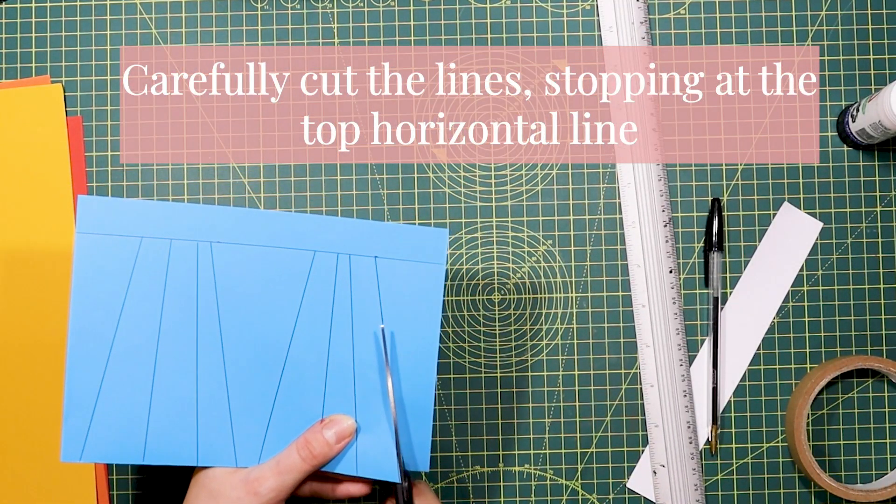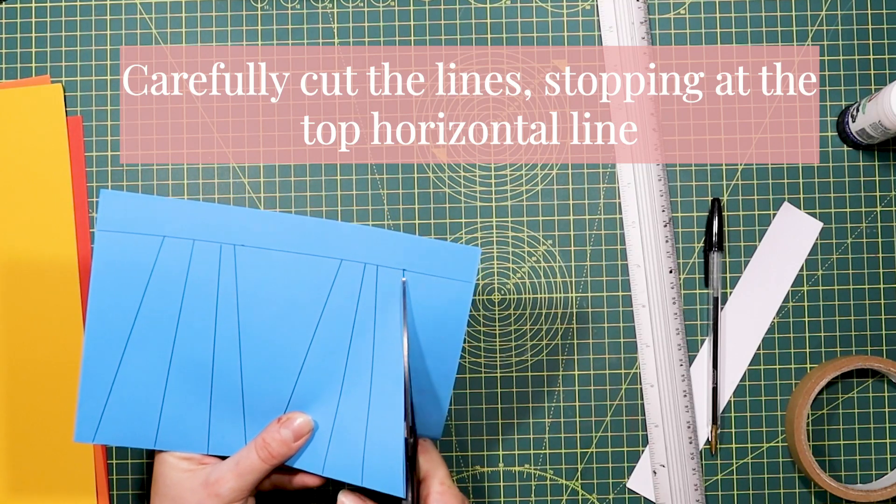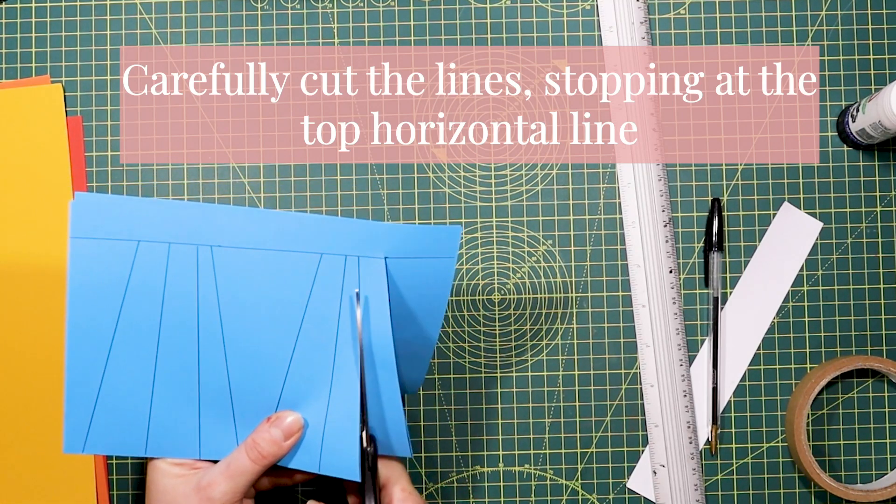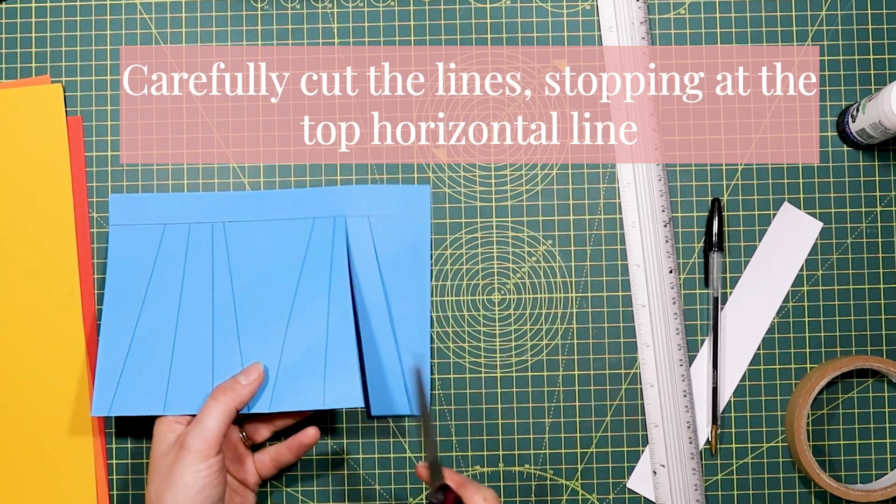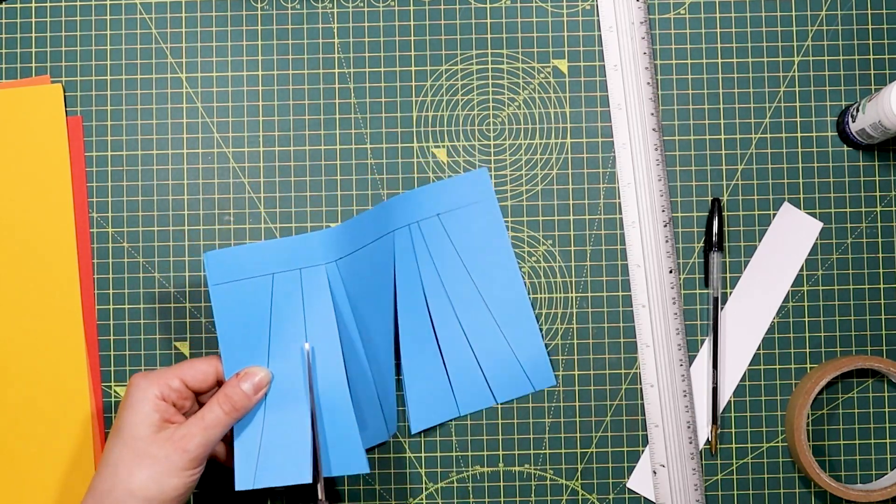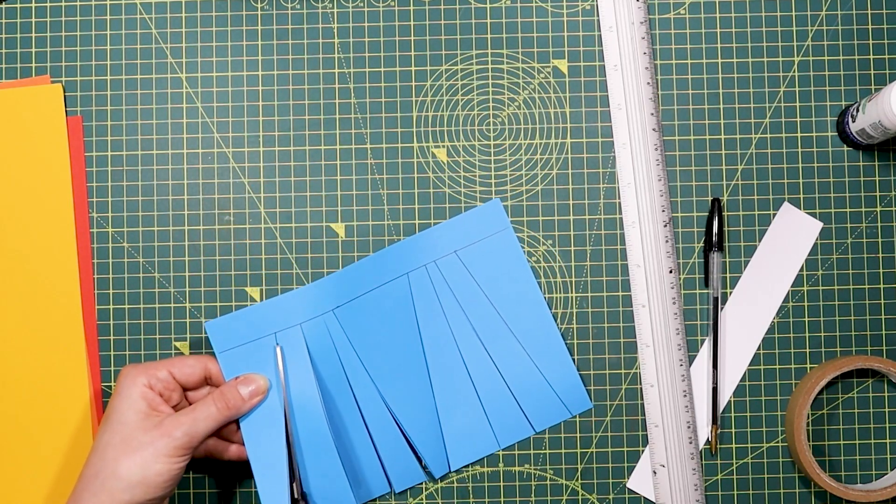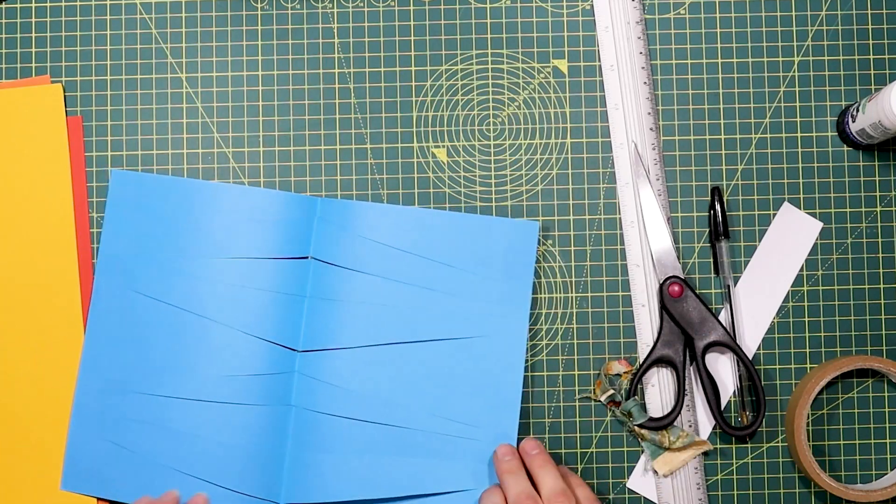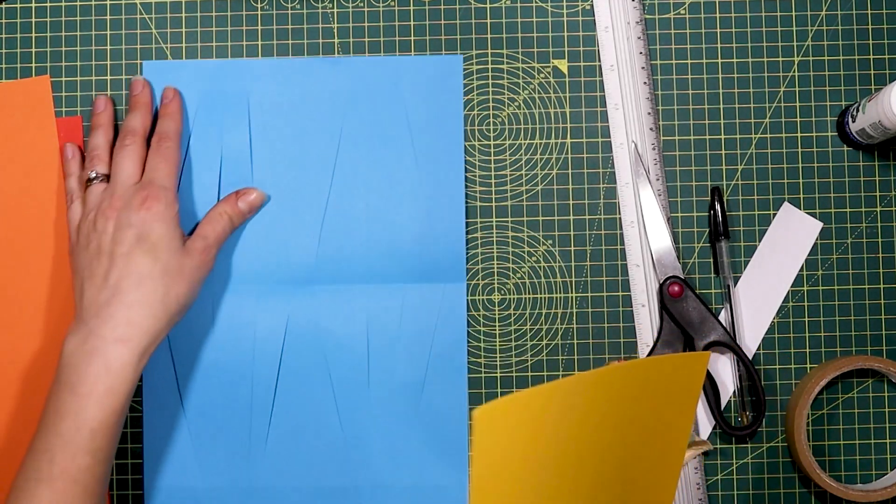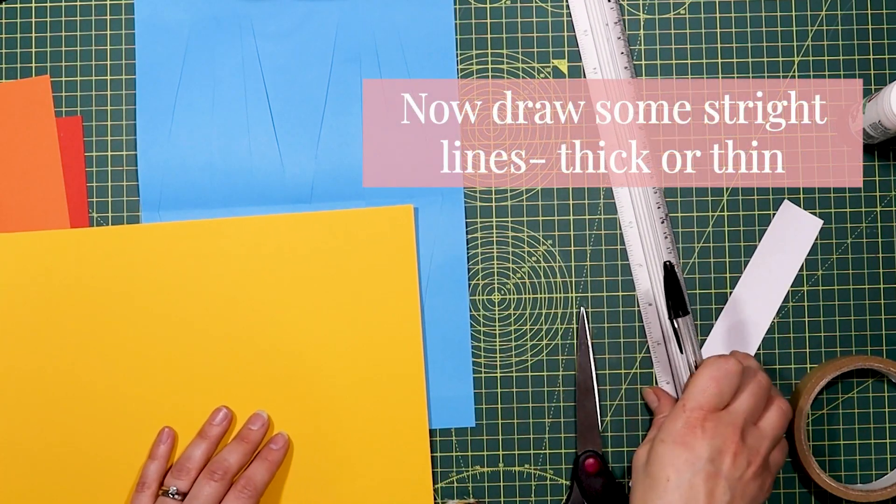Now you're going to cut into these, but make sure you stop before that top line. Any weave, whether it's on a traditional loom or a paper loom, needs a warp and a weft. The warp is the vertical line that runs all the way through the weave, and the weft is whatever you put in between the warp. In our case it's paper, but traditionally it may be wool or something else.